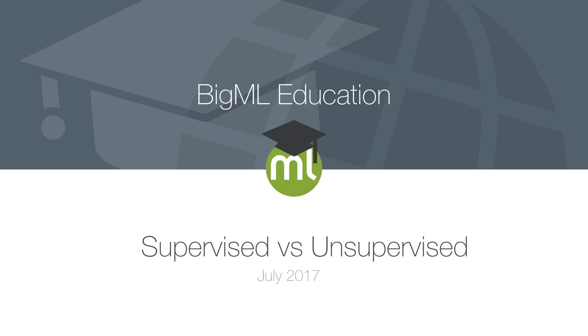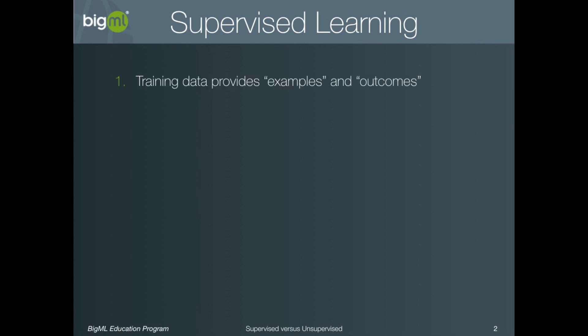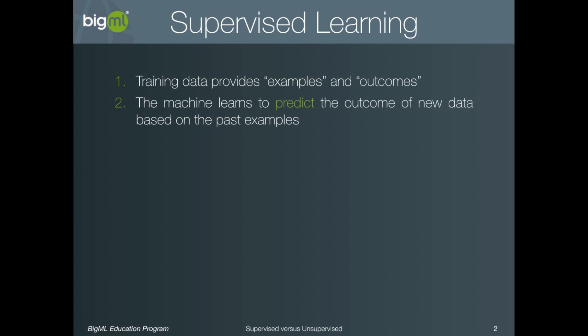Hello and welcome to the BigML tutorial series. This video is a brief discussion of the difference between supervised and unsupervised learning techniques and why this difference is important. Let's begin with supervised learning. The basic idea is that your data provides examples of situations, and for each example specifies an outcome. The machine will then use this training data to build a model which can predict the outcome of new data based on these past examples.